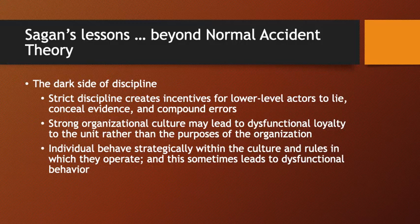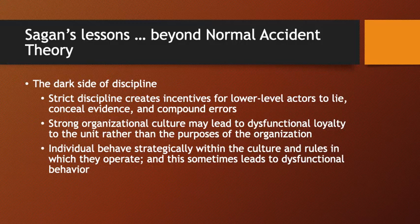Sagan comes down pretty much on the side of normal accident theory. He thinks the optimism of high-reliability organization theory is overstated. For example, he argues that discipline in organizations like aircraft carriers leads to consistency and continuity, but it also creates substantial incentives for lower-level actors to lie, conceal evidence, and compound errors. In fact, a strong organizational culture may lead to dysfunctional loyalty to the unit rather than to the purposes of the organization.